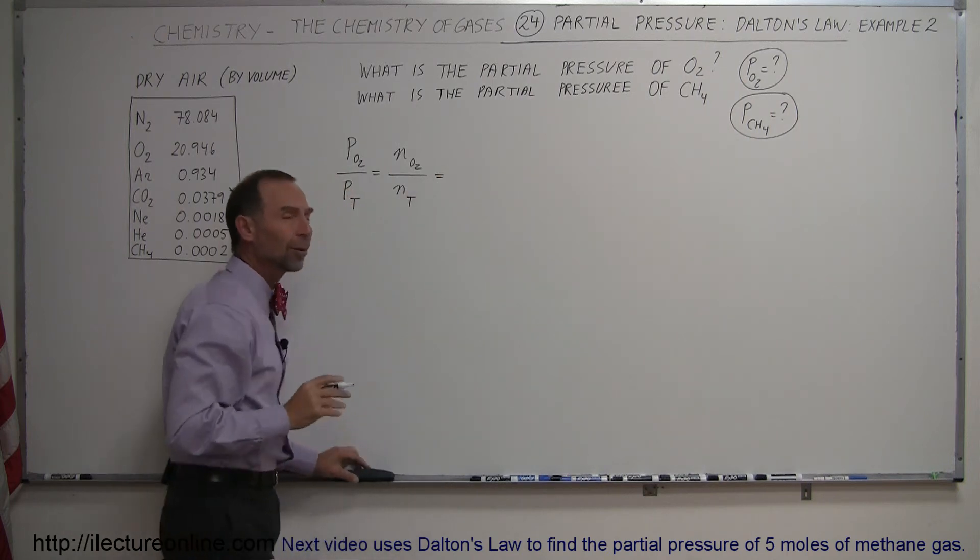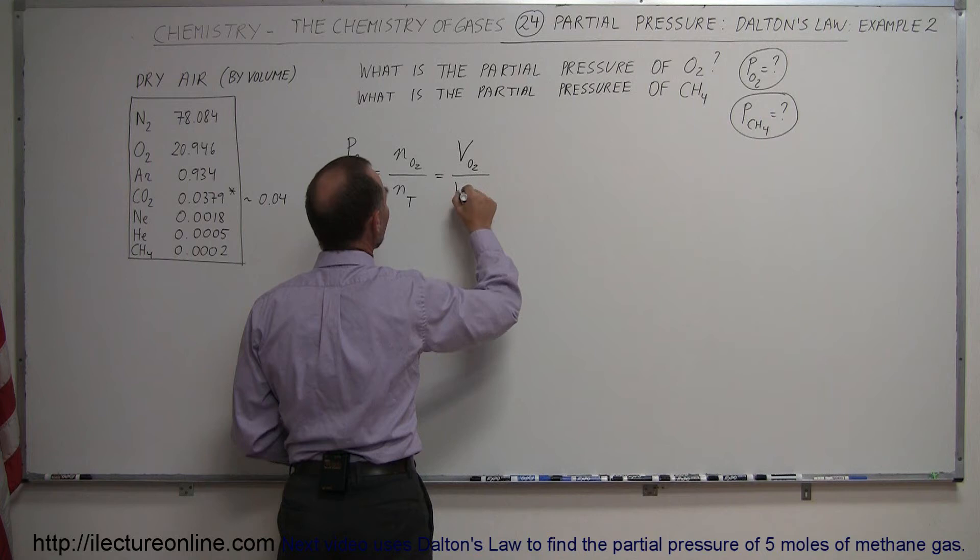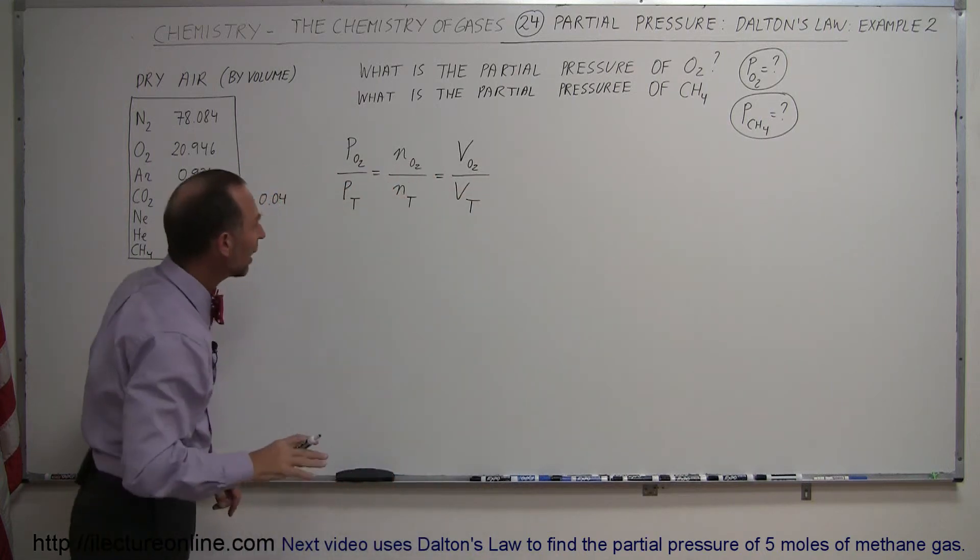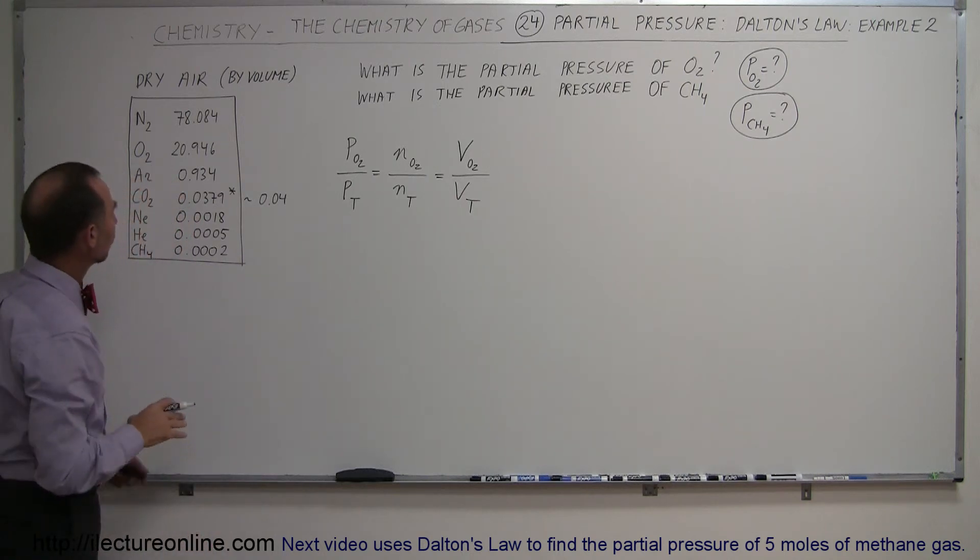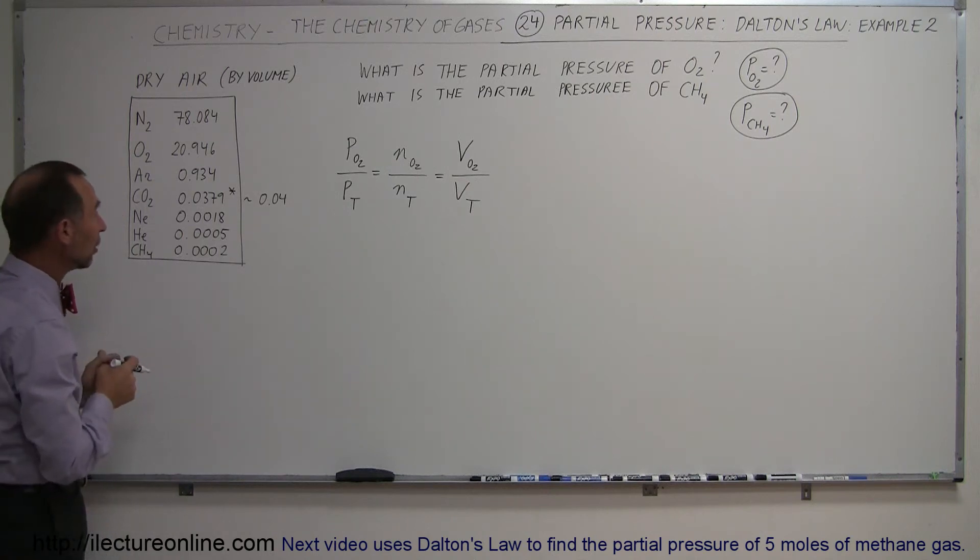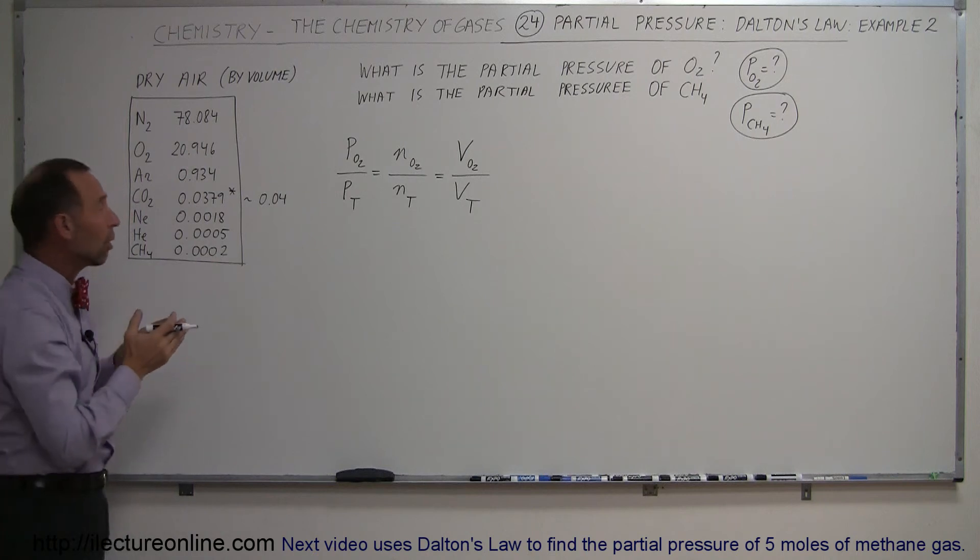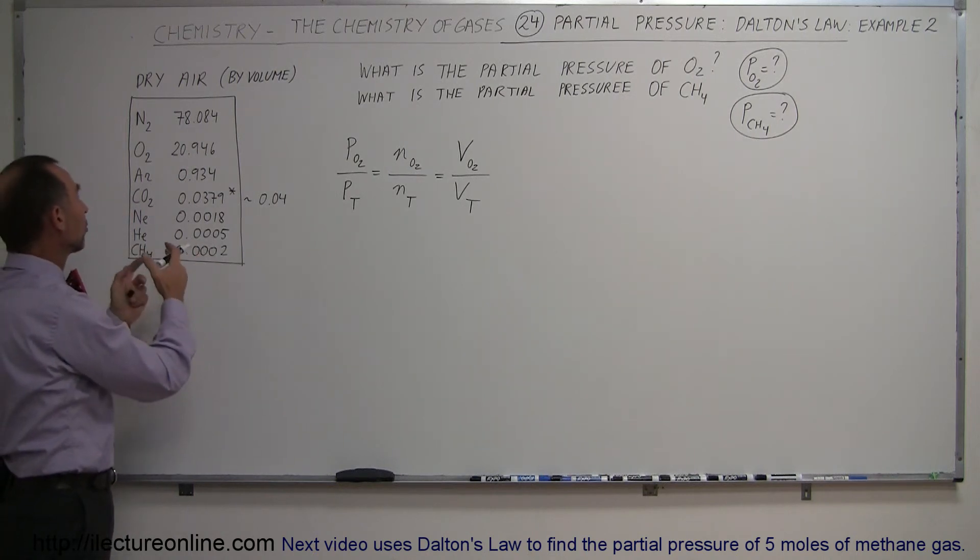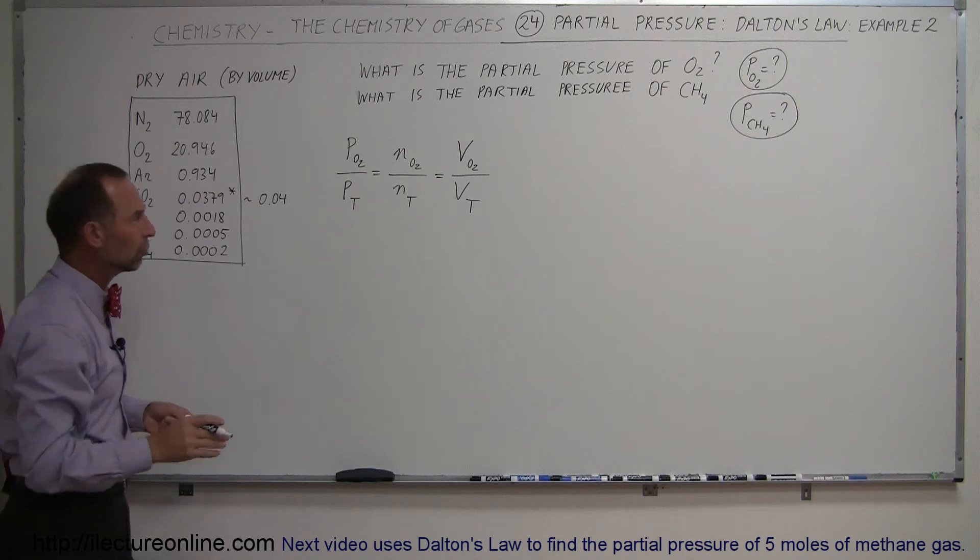Also notice that it's equal to the ratio of the volume taken up by the constituent, like oxygen, divided by the total volume. Since we have the abundance of these constituents expressed in terms of the percentage of the total volume, we can see that these numbers really represent the partial pressure, the partial volume, and the partial number of moles, all the same as the percentage of the total, which means that these numbers also represent the partial pressure.